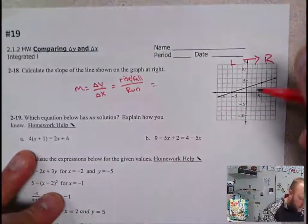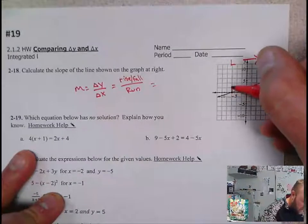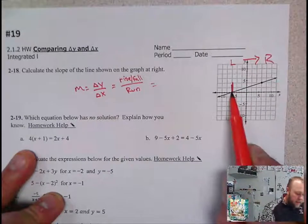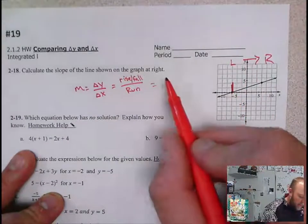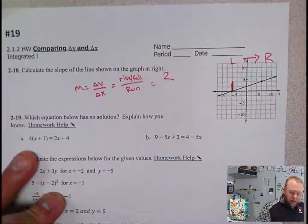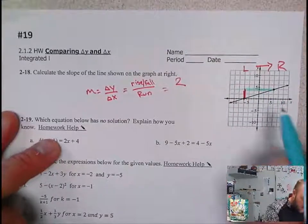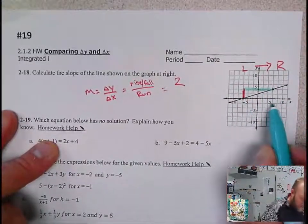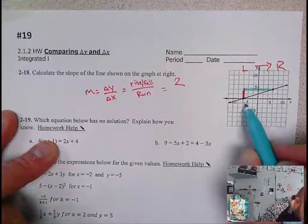So let's first look at the rise. To get from this point to this point, I need to rise two. Next up, we're going to look at our run.